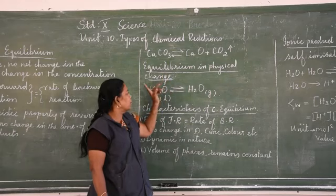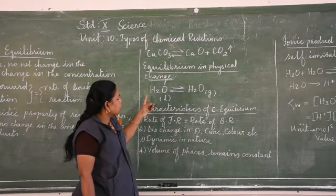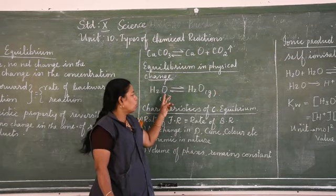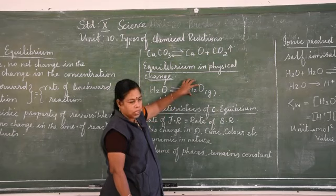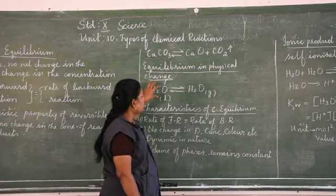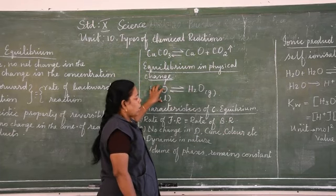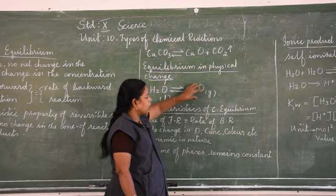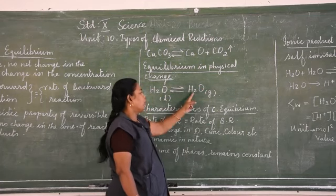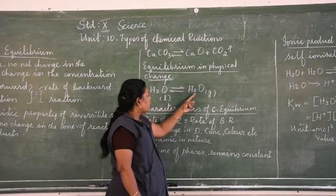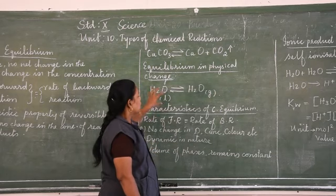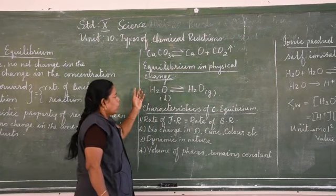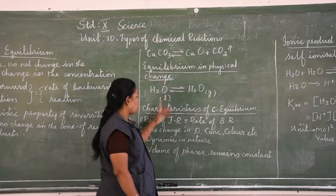Next we are going to see equilibrium in physical change. Consider water taken in a closed vessel. When we heat the water, it starts to evaporate and water vapor collects at the top of the vessel. Initially the concentration of liquid water is more. As time goes, the concentration of the gaseous vapor increases, and automatically the backward reaction starts to occur — vapor condenses back to liquid. So chemical equilibrium occurs in a change of physical state also.